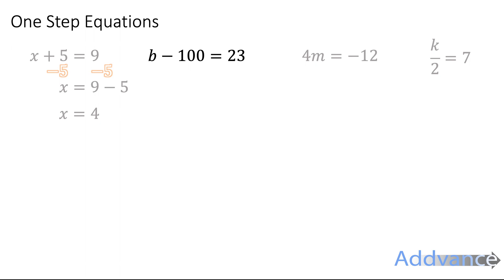Over here b minus 100 equals 23 and you're going to add 100 to both sides and you get b equals 123.